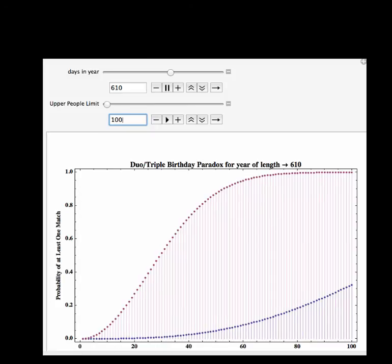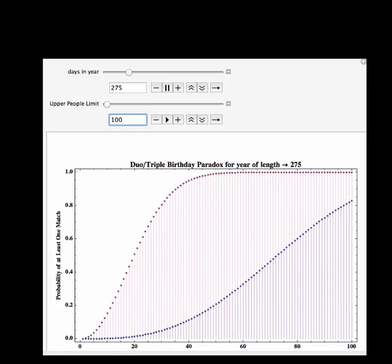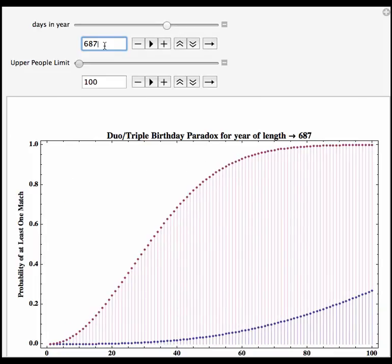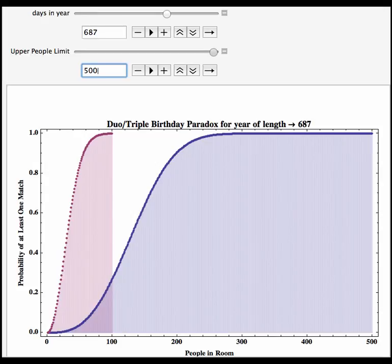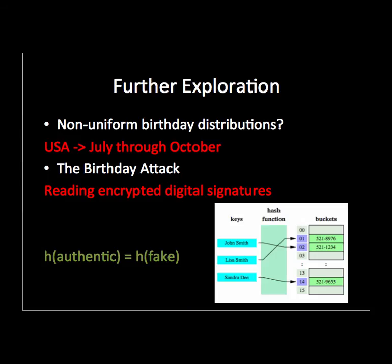The probability of a match between three people, shown in blue, is much lower than the probability of a match for two people. Setting our year to that of a Martian year, 687 days, we can view our graph over a larger range by changing this from 100 to 500. We see that it takes much longer for the probability of a match between three people to converge to 100% than it does for a match between two people to converge to 100%. We've examined the birthday paradox for two and three people, and have looked at what happens to the distribution when we change the amount of days and also the separation between the birthdays to qualify for a match.